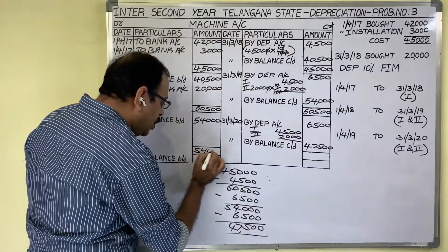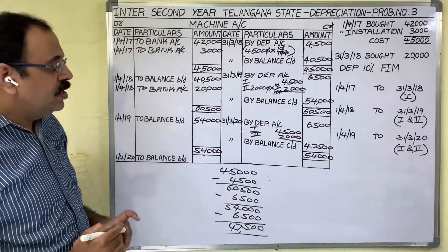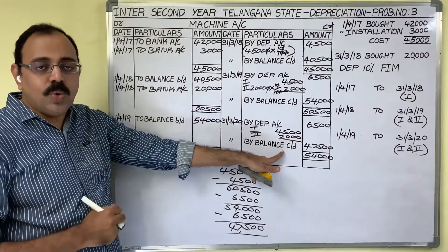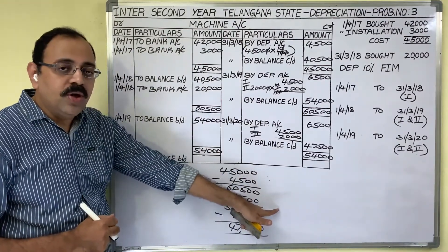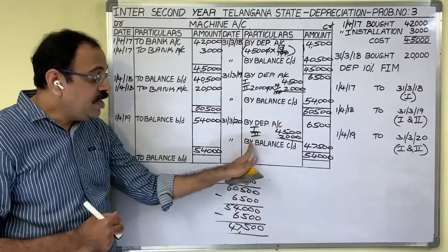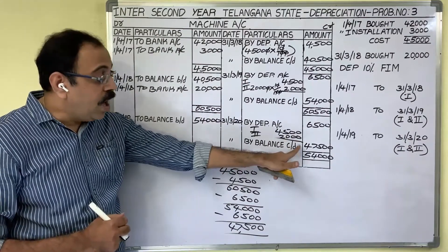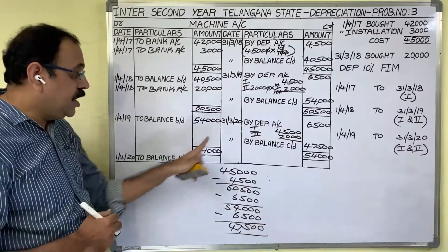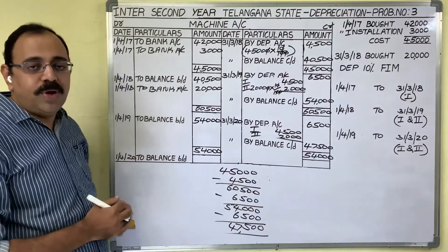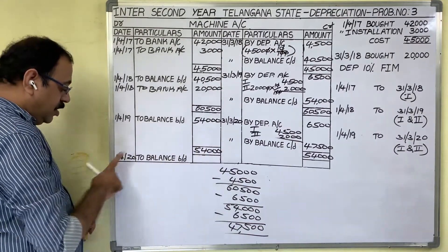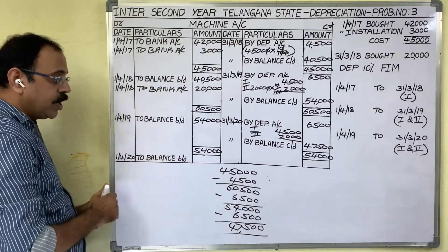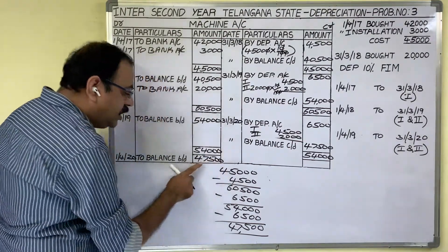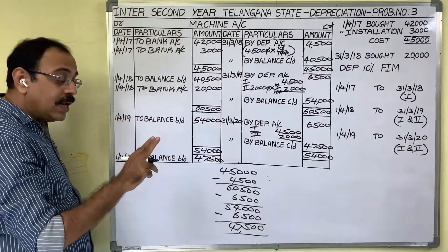Write down the totals on both sides — three years are completed. But these two assets have not yet been sold, so this account will continue into the next year. That is why the account shows a balance carried down of 47,500. Since the account is not yet closed, bring the balance forward to the next year: on 1st April 2020, write 'Balance Brought Down' of 47,500. This amount contains the opening balances of both assets.